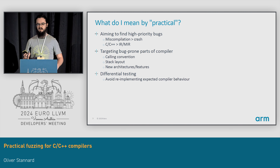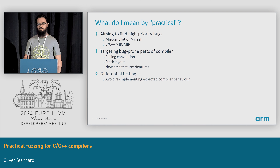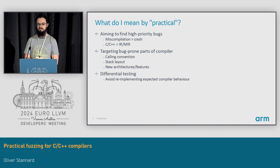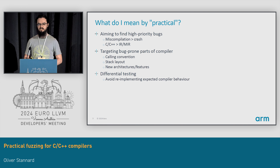But first, what do I mean by practical in the title? So this is roughly the aims of what I'm using these fuzzers for. I'd like to find high priority bugs, where miscompilations are more important than crashes, and something with a source code reproducer being more valuable than something with an IR reproducer, because they're not something real users could hit. I tried to prioritize targeting bug-prone parts of the compiler — we found a number of bugs in calling conventions and stack layouts in the past — as well as new architectures and compiler features that might not have been well tested yet. And I try to often use differential testing, comparing Clang and GCC's behavior, so I avoid having to implement the entire behavior I'm testing.